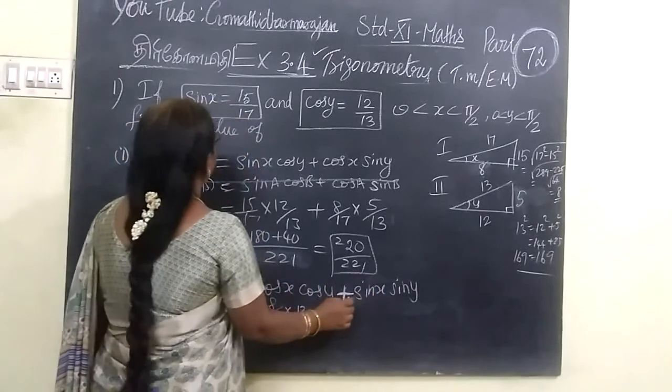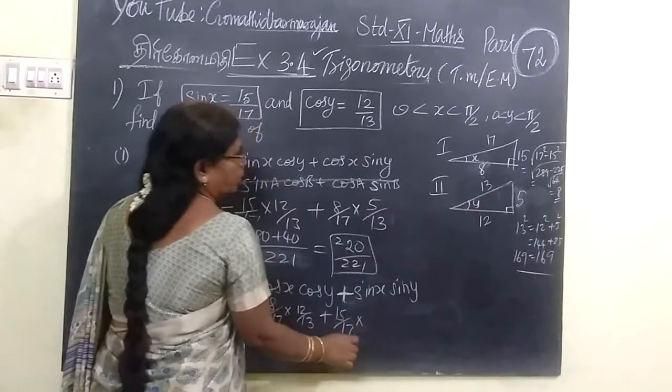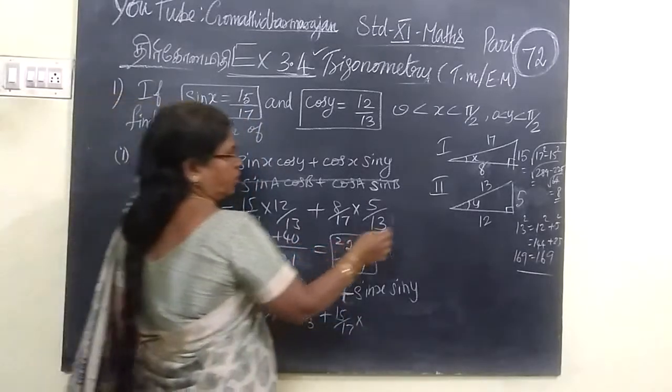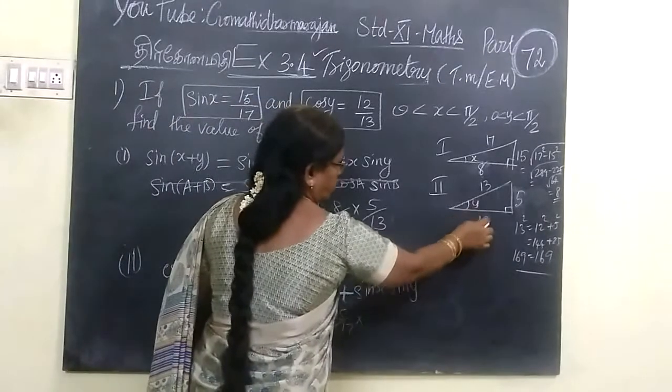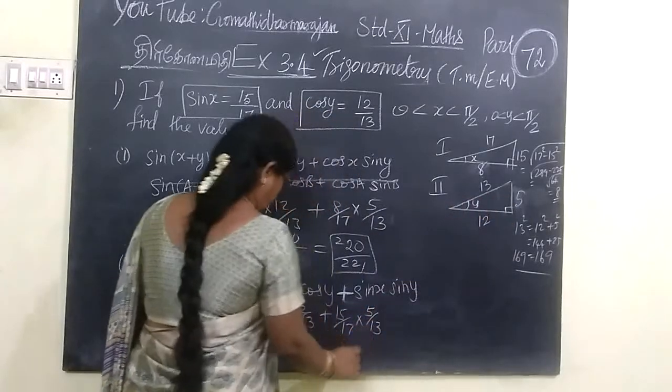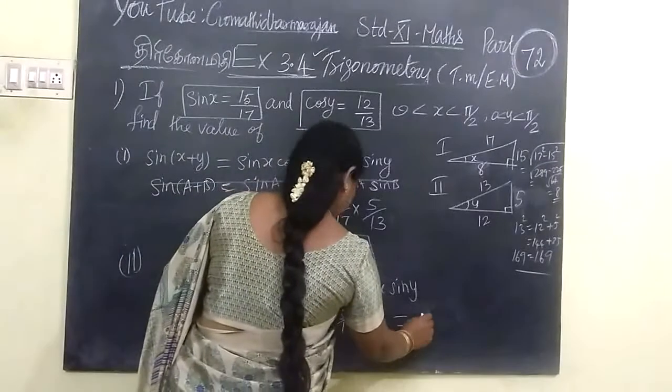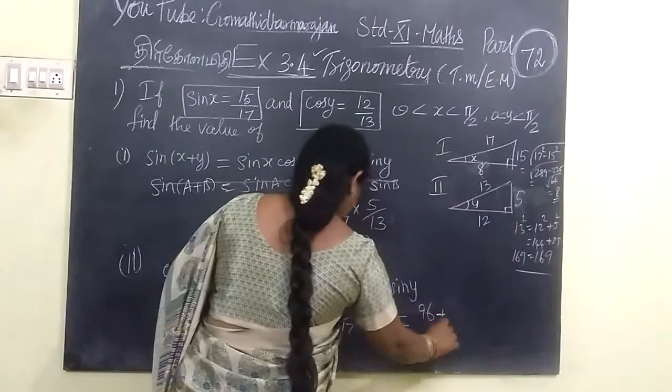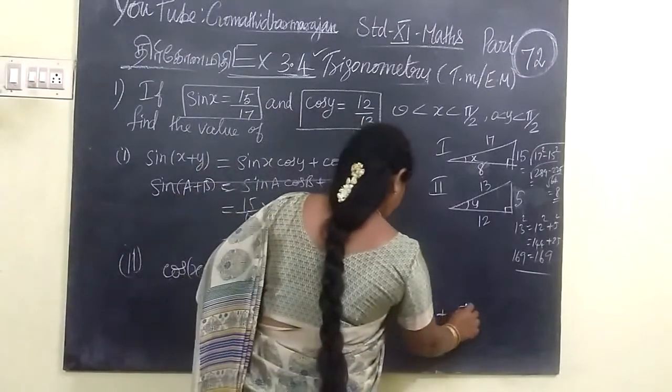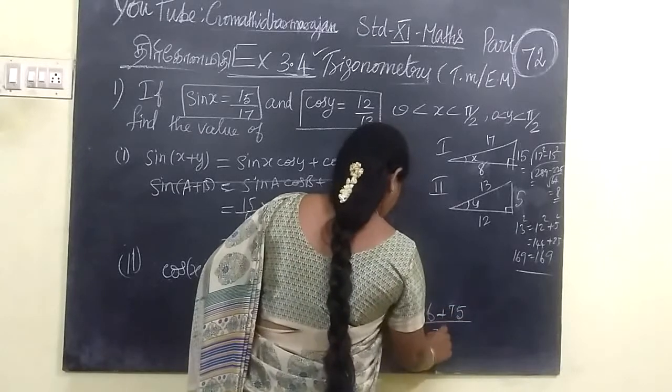Plus sin x, which is 15 by 17, into sin y, which is 5 by 13. So you are getting 96 plus 75.